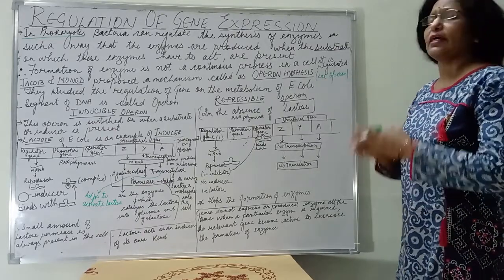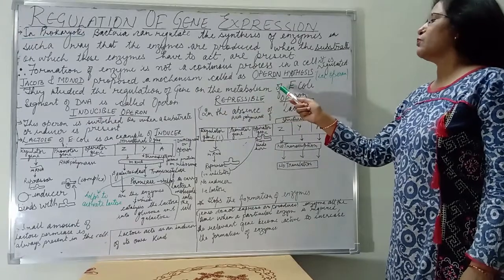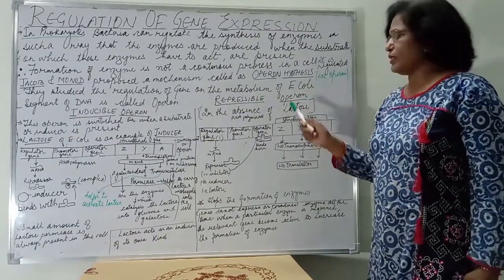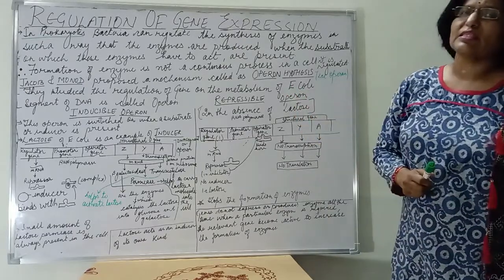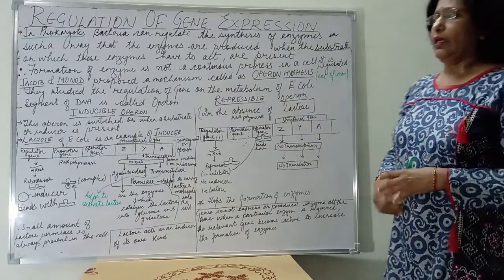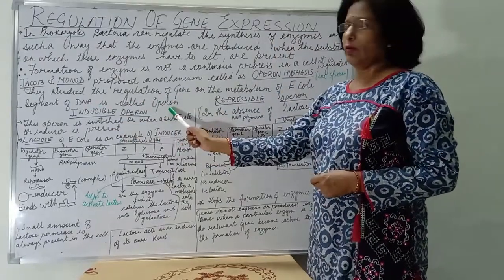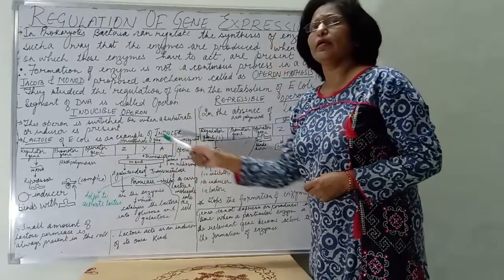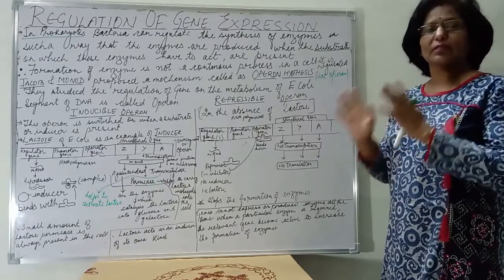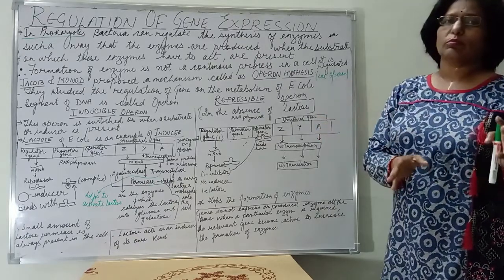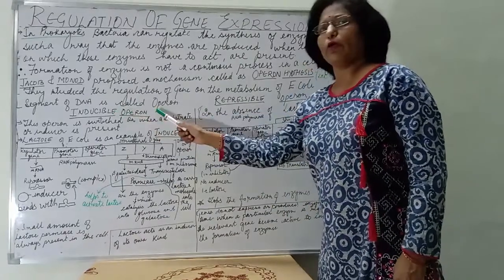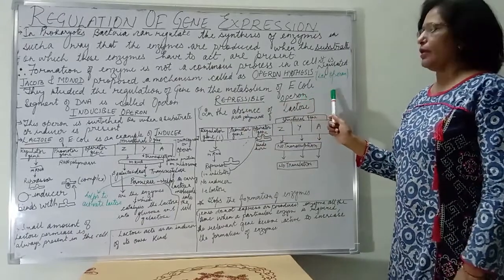They studied the regulation of gene expression on the metabolism of E. coli. They took the bacteria E. coli for their experiment and named the segment of DNA as an operon. They divided their experiment into two parts: the first part is called the inducible operon and the second is called the repressible operon.